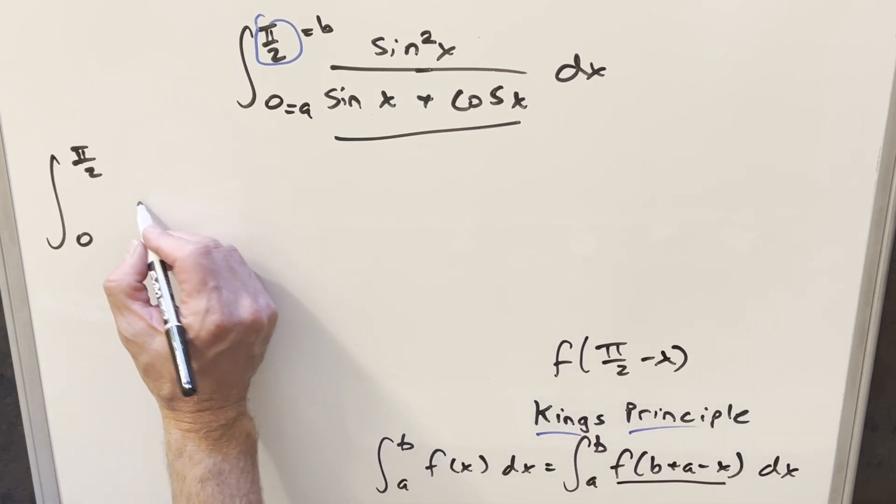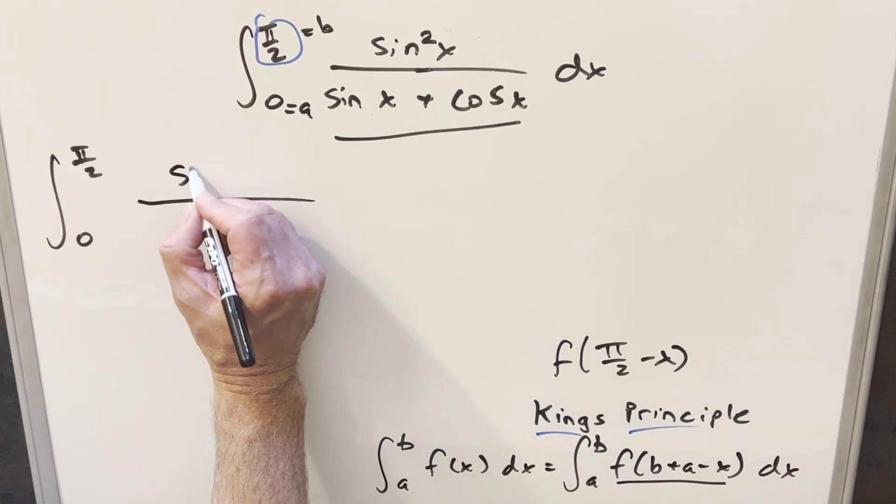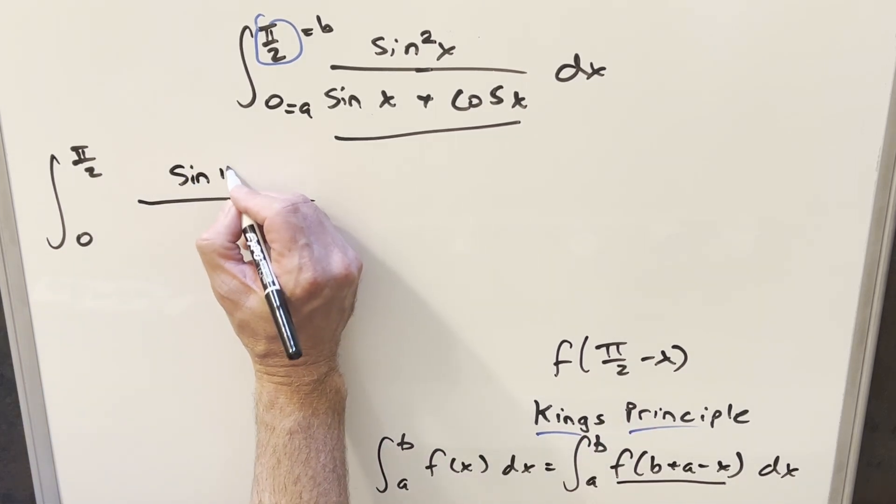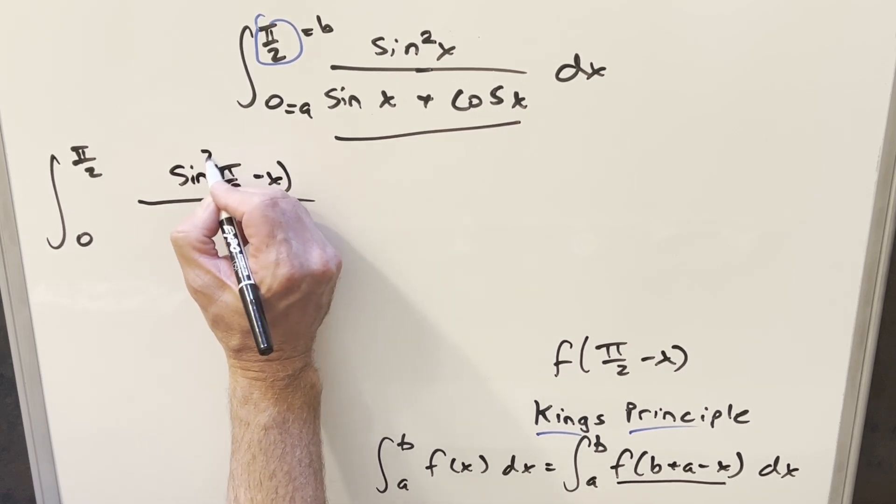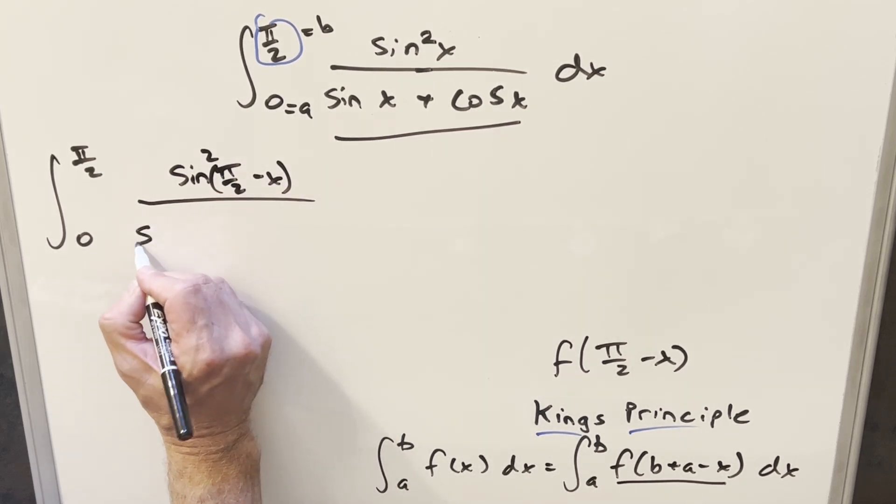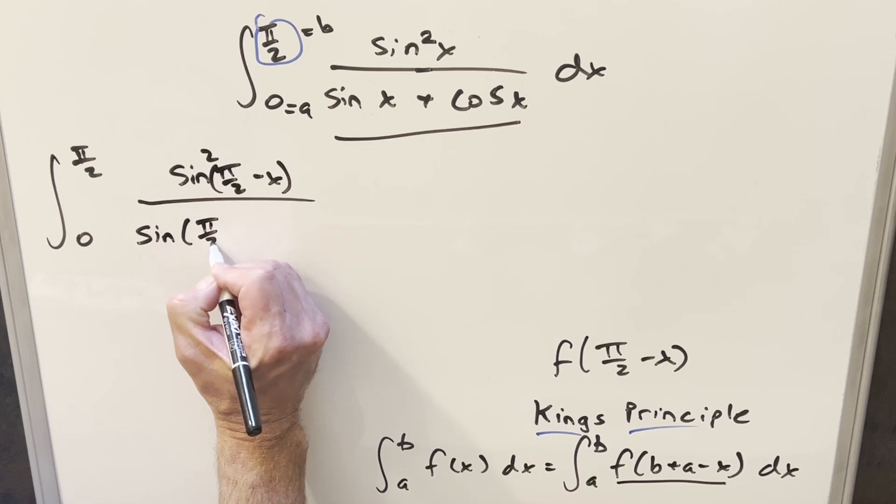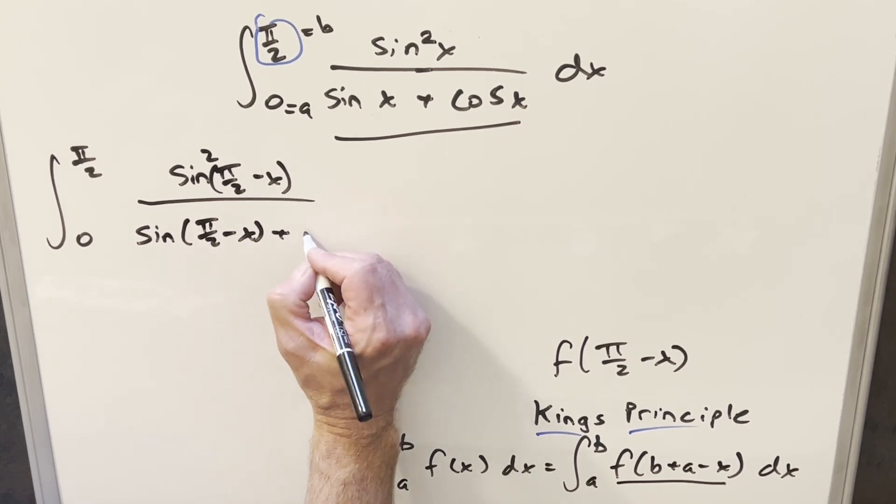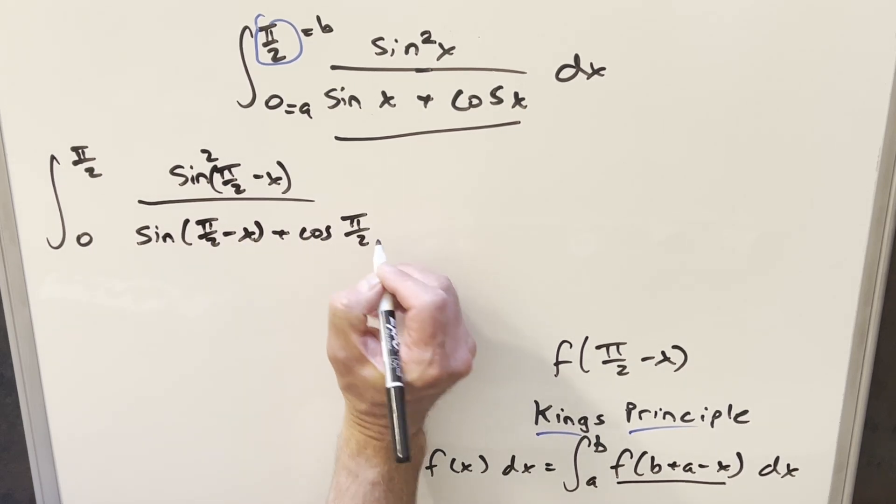So substituting this in everywhere, first in the numerator we're going to have sine, let's write it like this, π/2 minus x squared. And then in the denominator, we're going to have sine π/2 minus x plus cosine π/2 minus x.